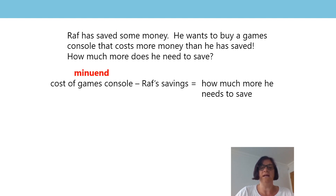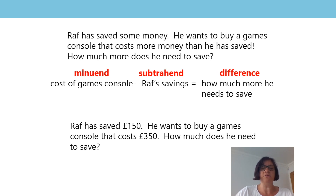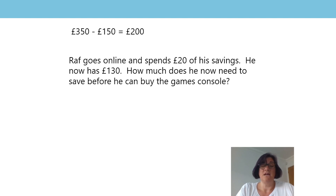The cost of the games console is the minuend, his savings are the subtrahend, and the amount he still needs to save is the difference. Now we've worked this out, let's look at the problem with numbers. Ralph has saved £150. He wants to buy a games console that costs £350. How much does he need to save? 350 subtract 150 is equal to 200. But he spent £20 of his savings online, so now he's got £130. How much money does he need to save now before he can buy the games console?